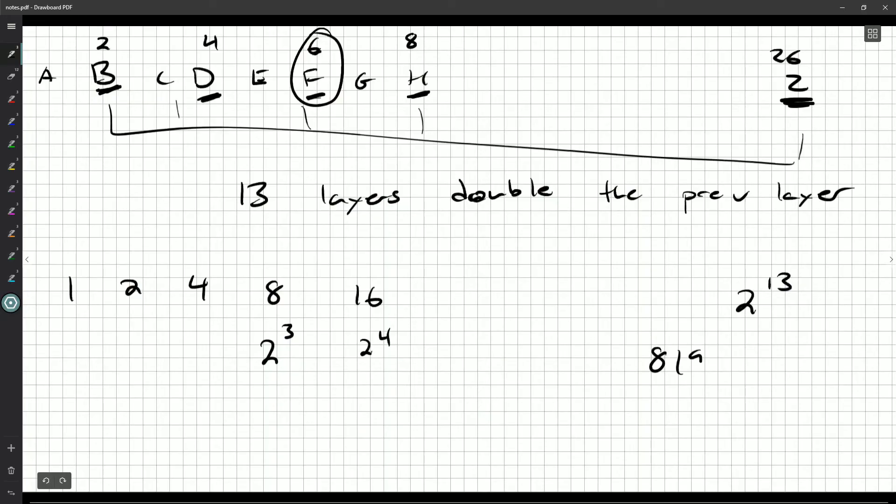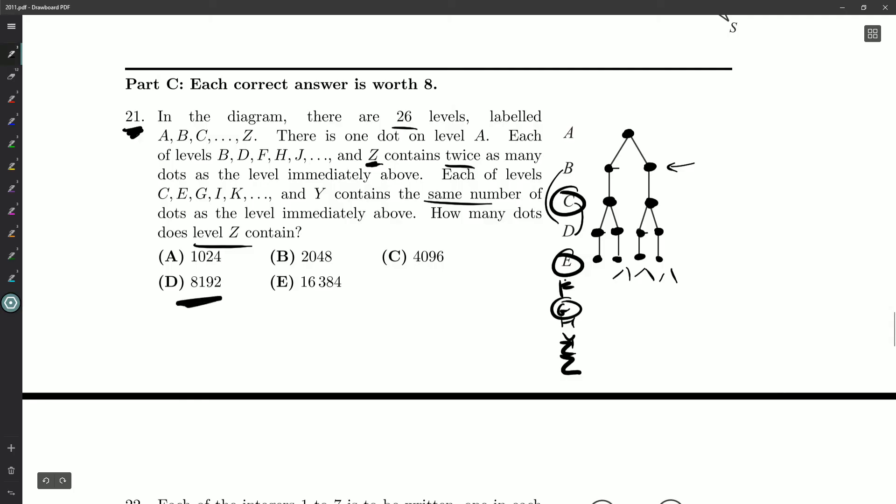We get 8,192, so we go back and we look for that amongst our answers. 8,192 dots in layer Z, and that would be a lot to write out for sure. And that's going to be an answer of D.